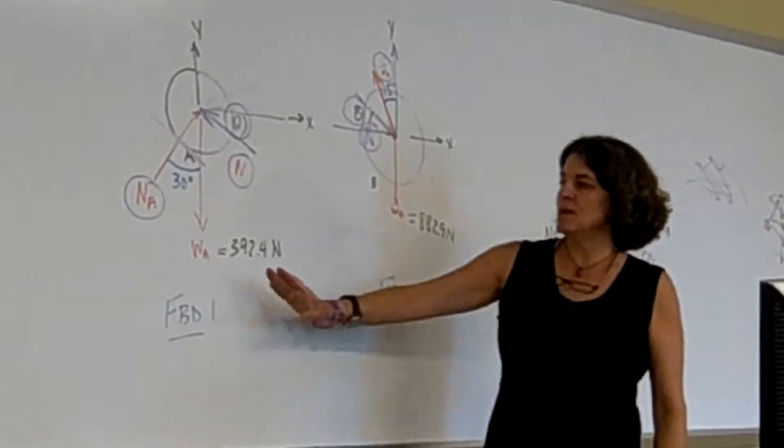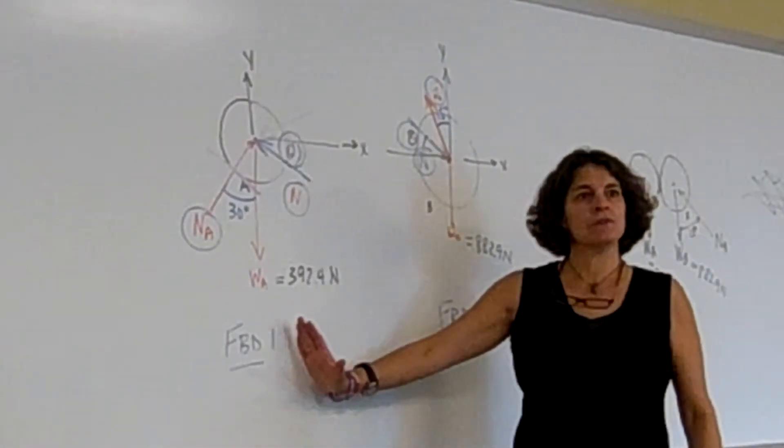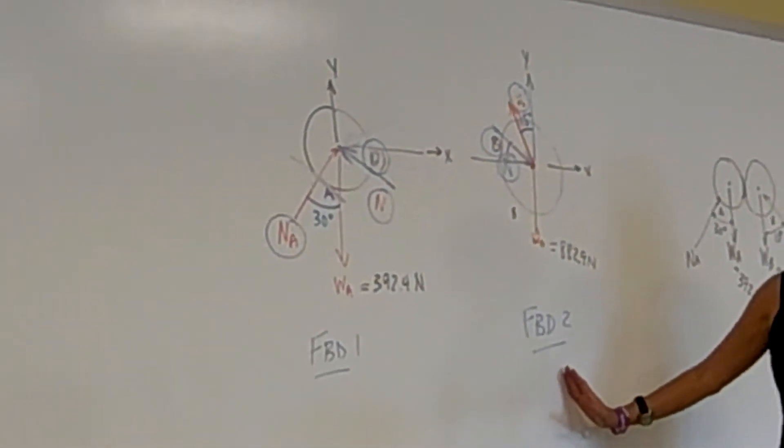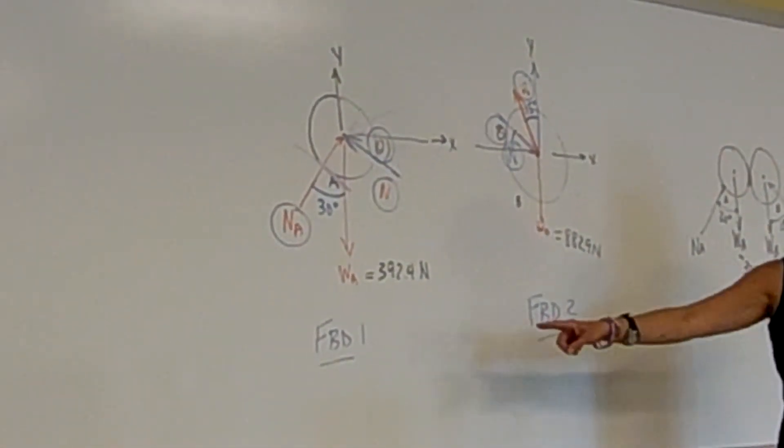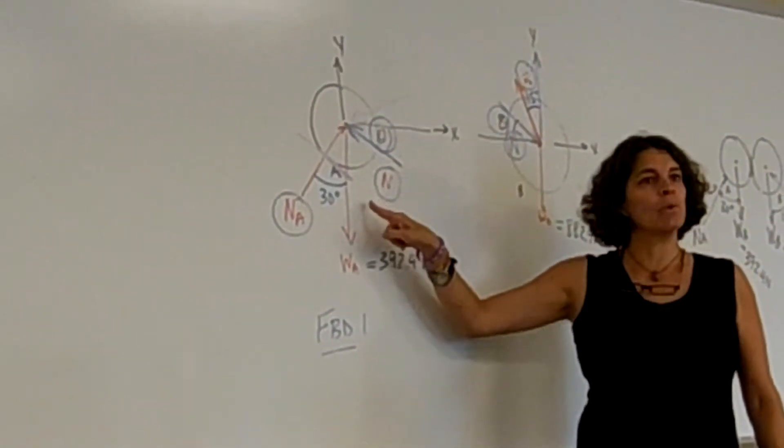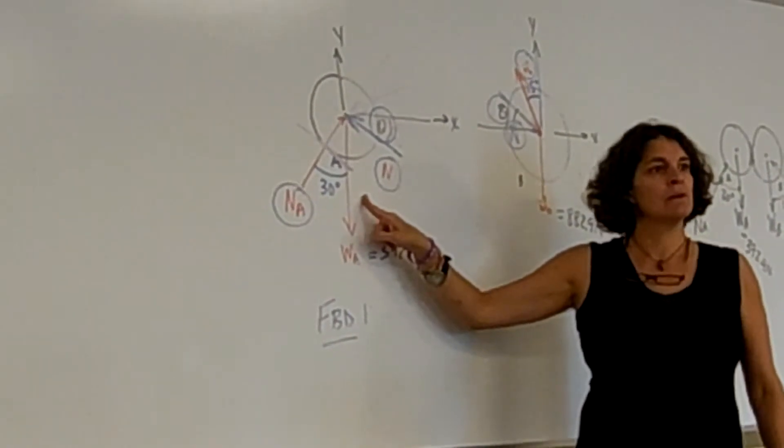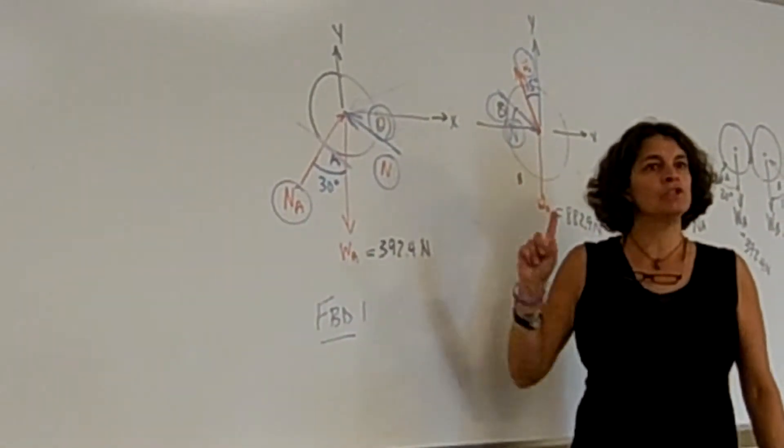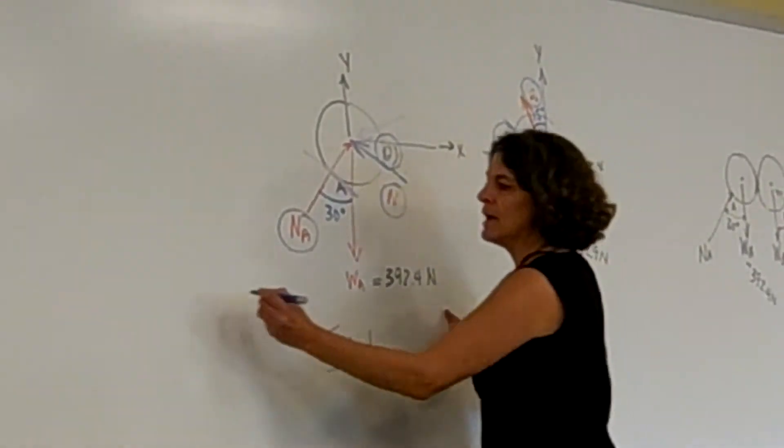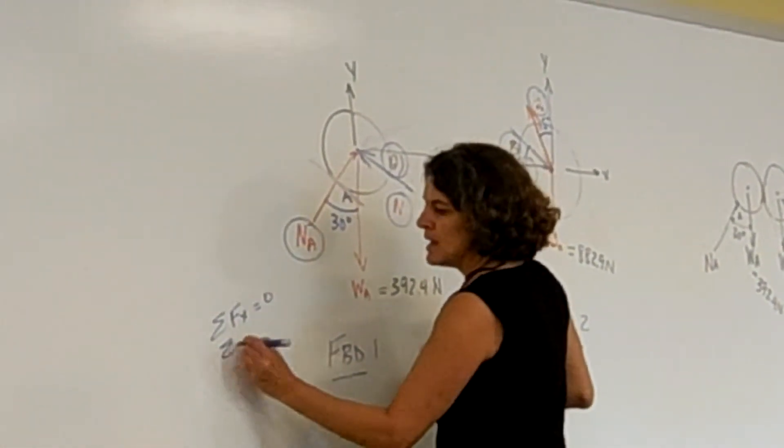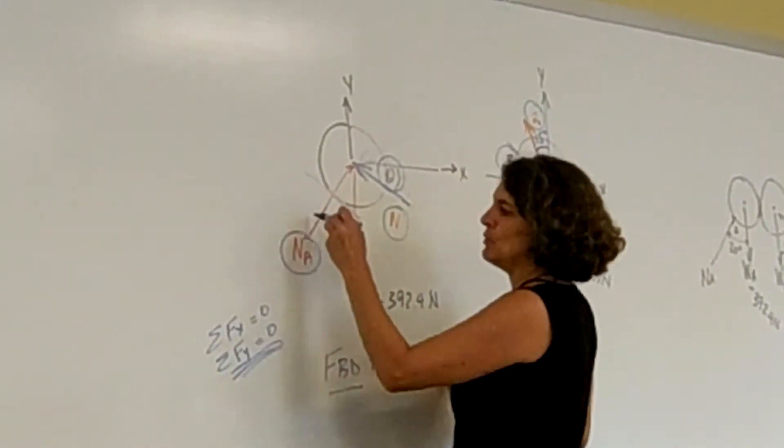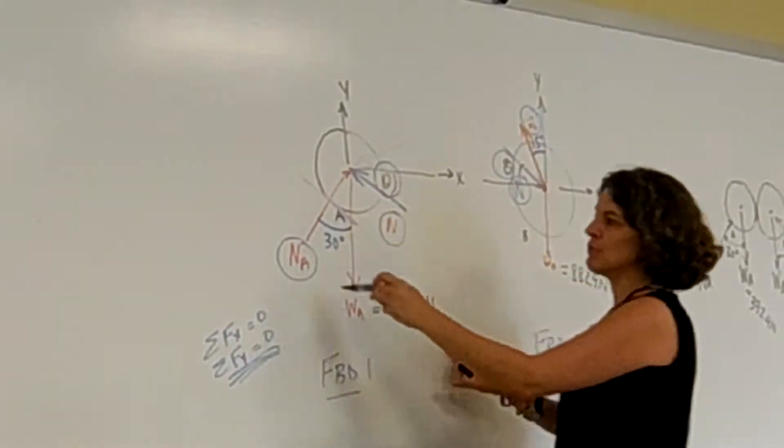Which means if we looked at free body diagram one first, or free body diagram two first, we would not be able to solve for all the unknowns. Because there are three unknowns, and how many equations can I get from this? Two. Only two. Sum of the forces in x and sum of the forces in y. I could only get sum of forces in x and sum of forces in y equals zero. I only have two equations for this, but I have three unknowns.